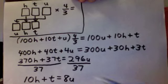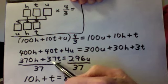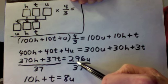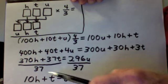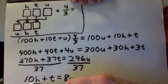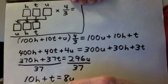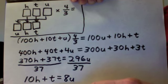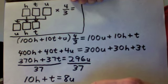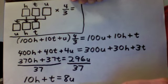These multipliers, 370, 37, and 296, are all multiples of 37, so I divide the entire equation by 37, and it gives me this quite simple equation 10h plus t equals 8u.